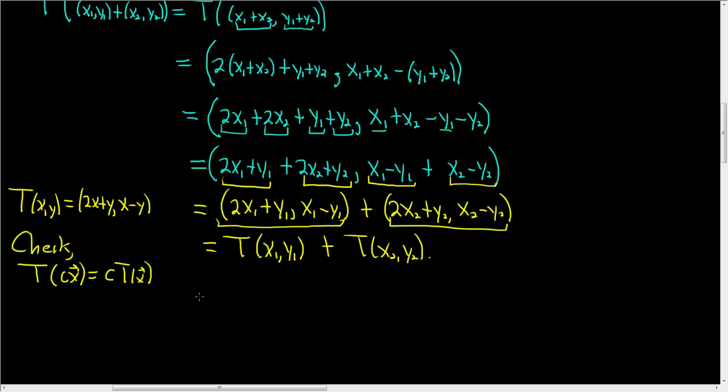So using the same vectors we have, we have T of c of x1, y1. And how do you multiply a scalar times a vector? You just multiply each of the components by the scalar. So this is cx1, cy1.